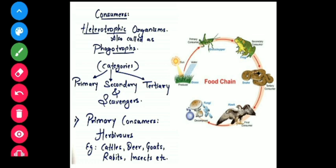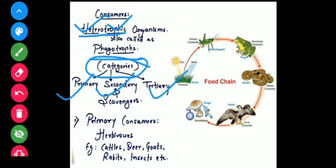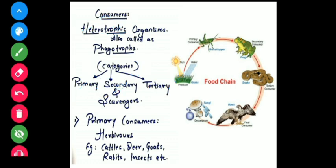The next biotic components are consumers. Consumers are heterotrophic organisms, also called phagotrophs — 'trophic' means feeder and 'hetero' means others, so they are not self-feeders. They depend upon another organism for food. They have been categorized into primary, secondary, and tertiary consumers. Besides these, parasites and scavengers can also be considered consumers.